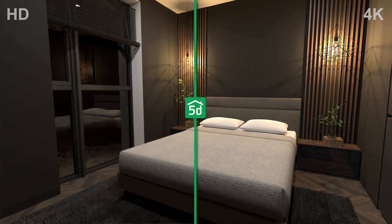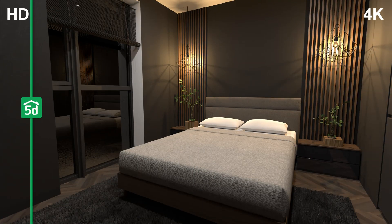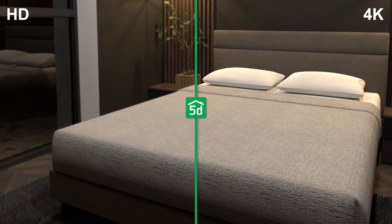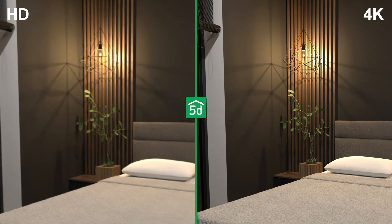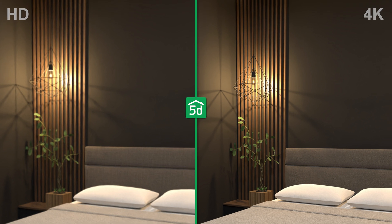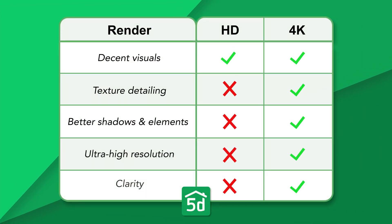Before we take a look at my favorite settings for 4K renderings, let's take a look at the difference between 4K and HD. 4K renders are amazing because they help visualize the final design as if you were actually in the room. Regular renders offer decent visuals but can miss out on the finer details and textures that bring a design to life, whereas a 4K render will deliver ultra high resolution and clarity.